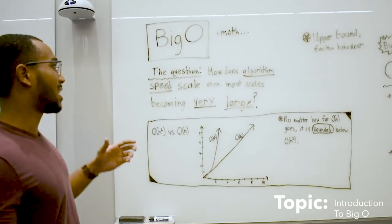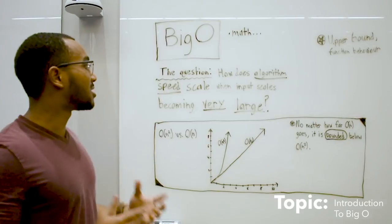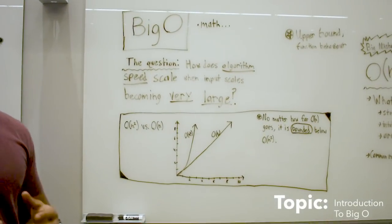We ask ourselves a really key question: how does an algorithm's speed scale when input becomes very large?